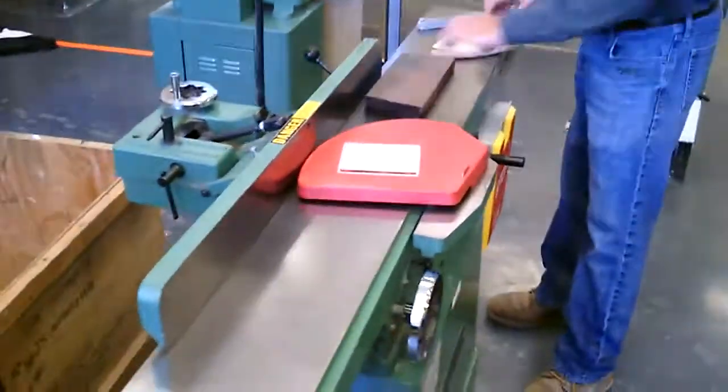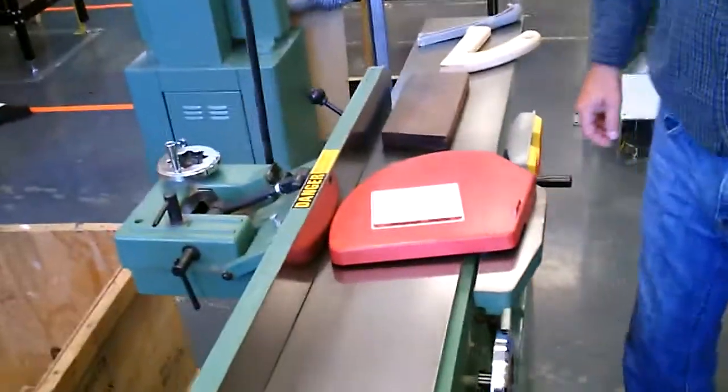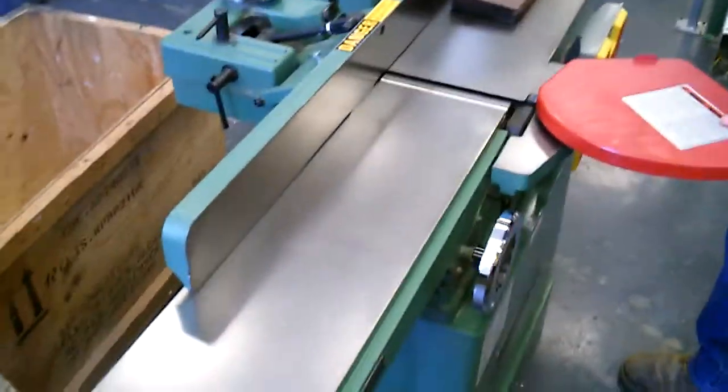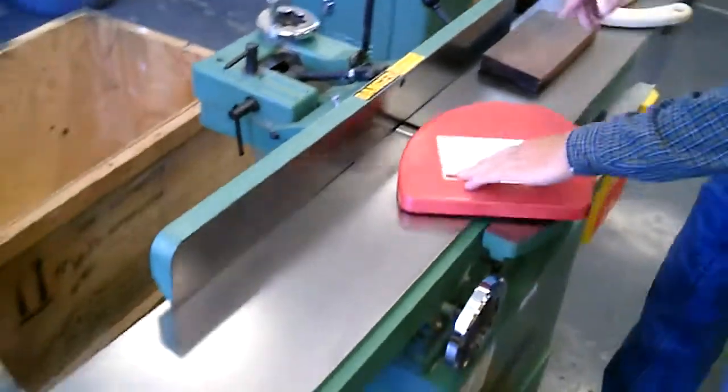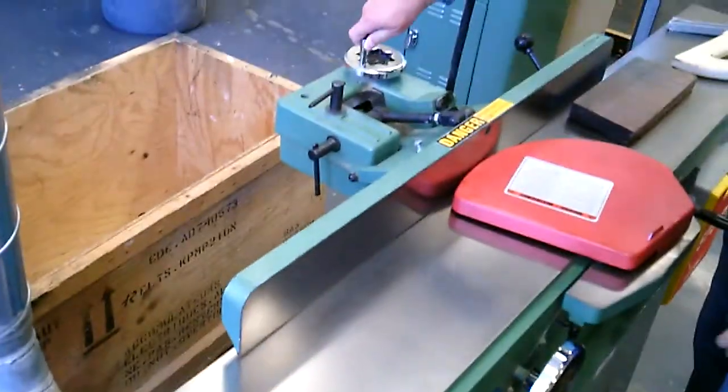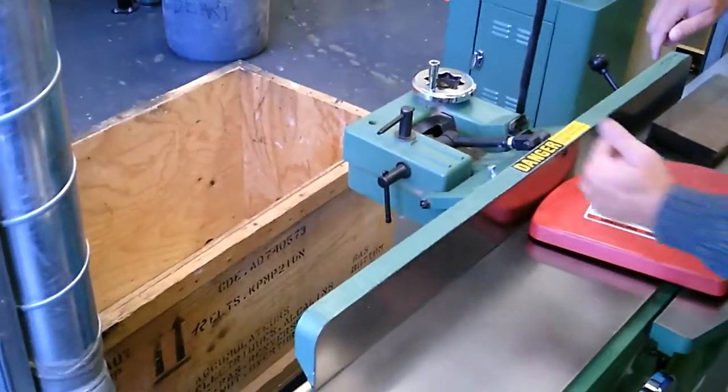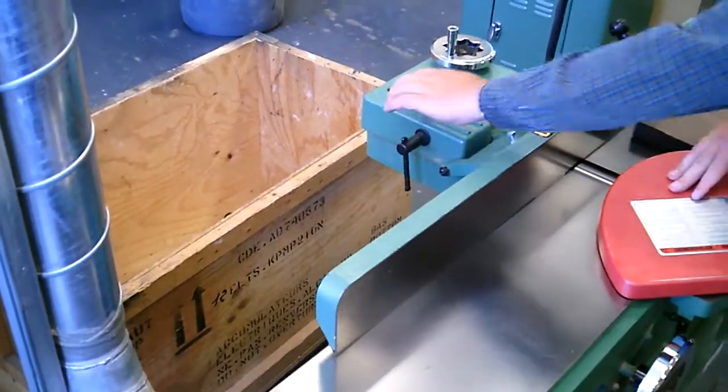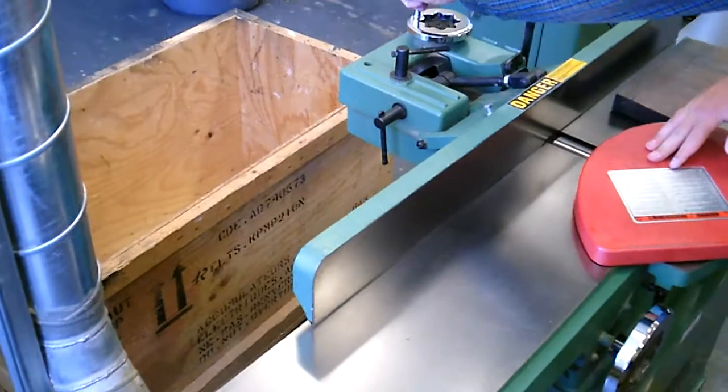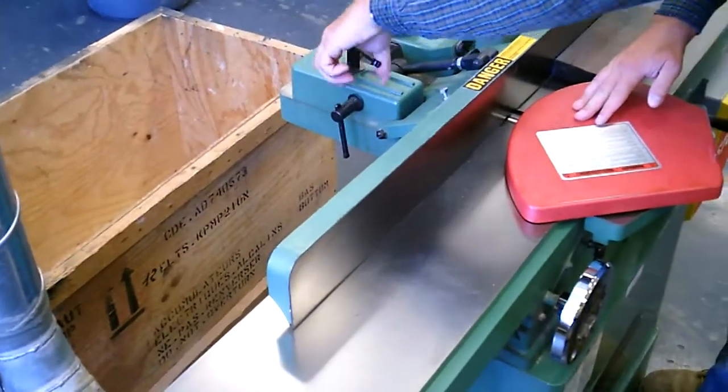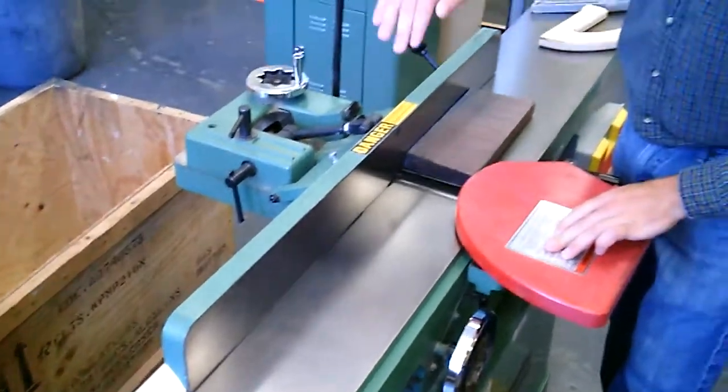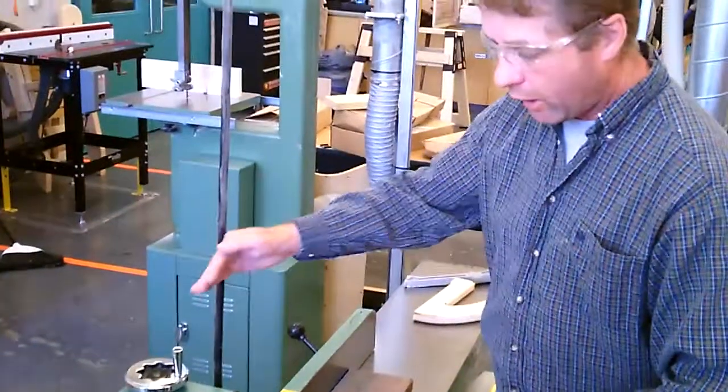Now let's go over the parts of the jointer. We have an infeed table, an outfeed table, a guard which guards the blade, and then we also have a wheel right here which adjusts the fence accordingly. So if the blade is nicked on this side, you loosen this right here and you can adjust it accordingly so you can use the whole blade. And it's good to move it so the blades don't wear out on one side.